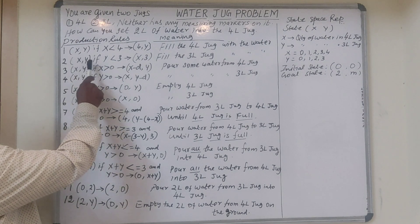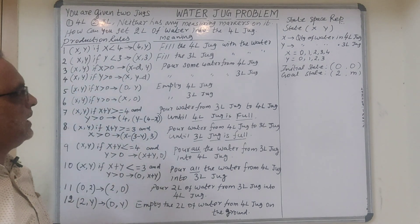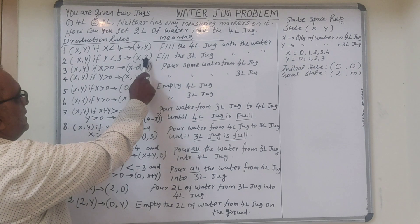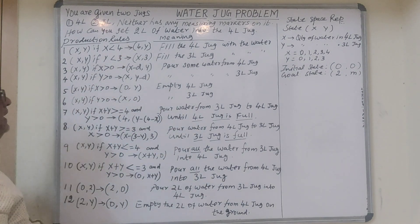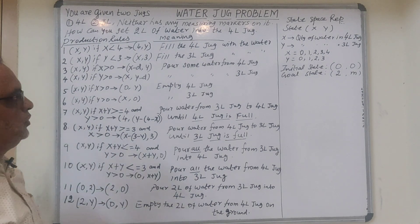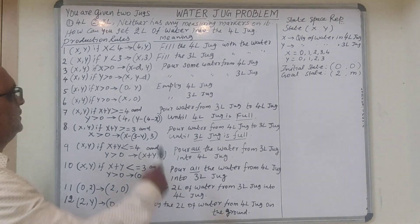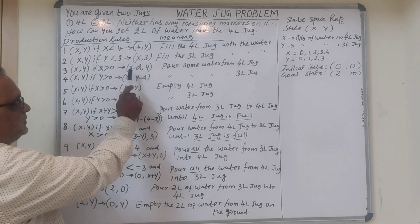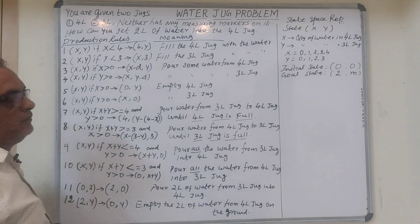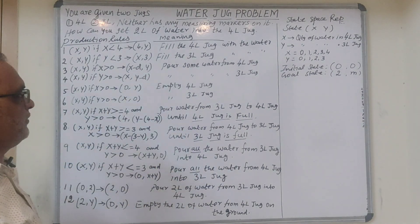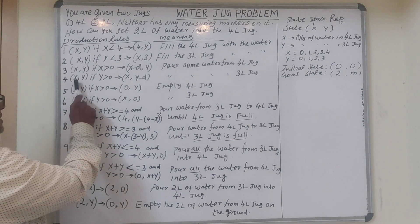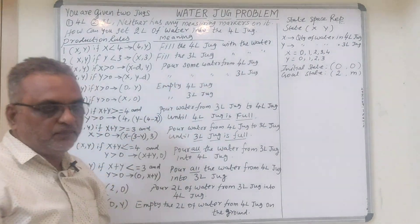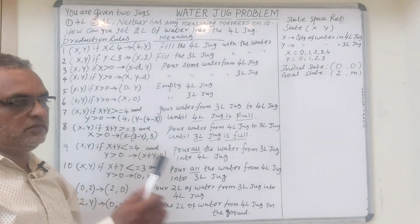Rule 2: X comma Y — if Y is less than 3, it implies fill the 3-litre jug. Rule 3 involves pouring some water from the 4-litre jug — that means we are removing some amount of water from the 4-litre jug so that the 3-litre jug remains as it is. Rule 4: X comma Y — if Y is greater than 0, X comma Y minus D. It means pour some water from the 3-litre jug, removing some water from it.